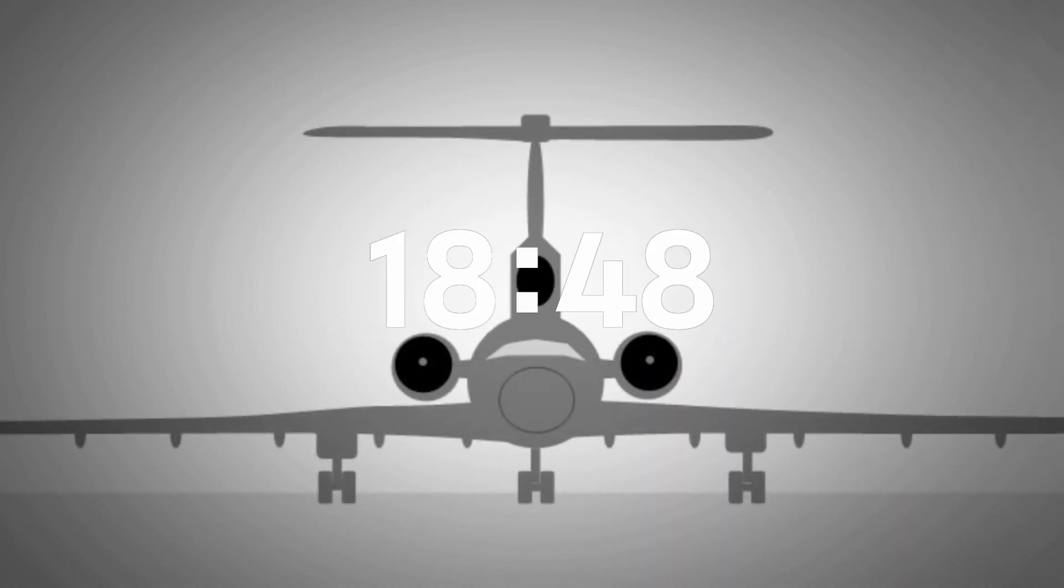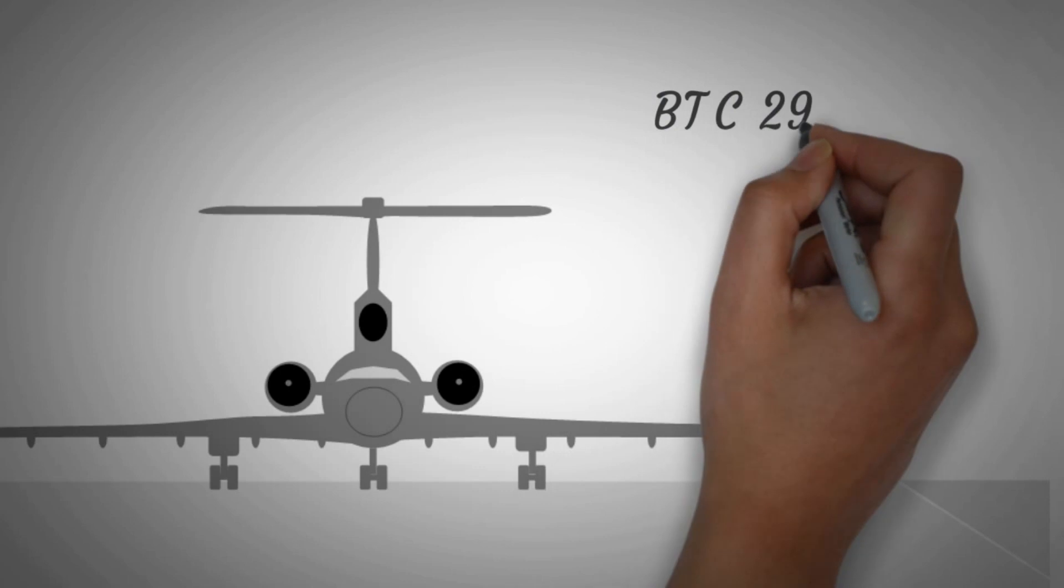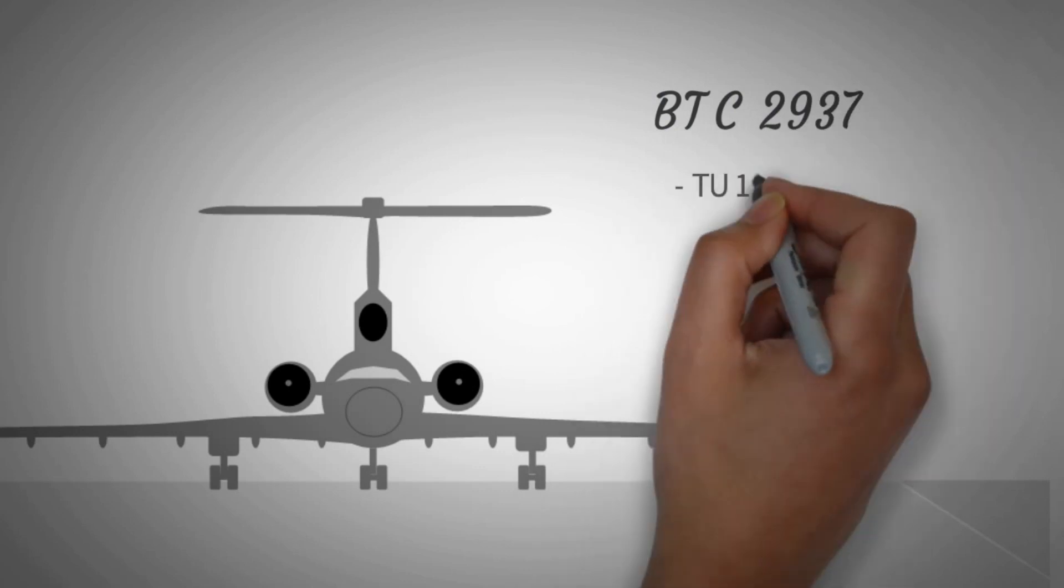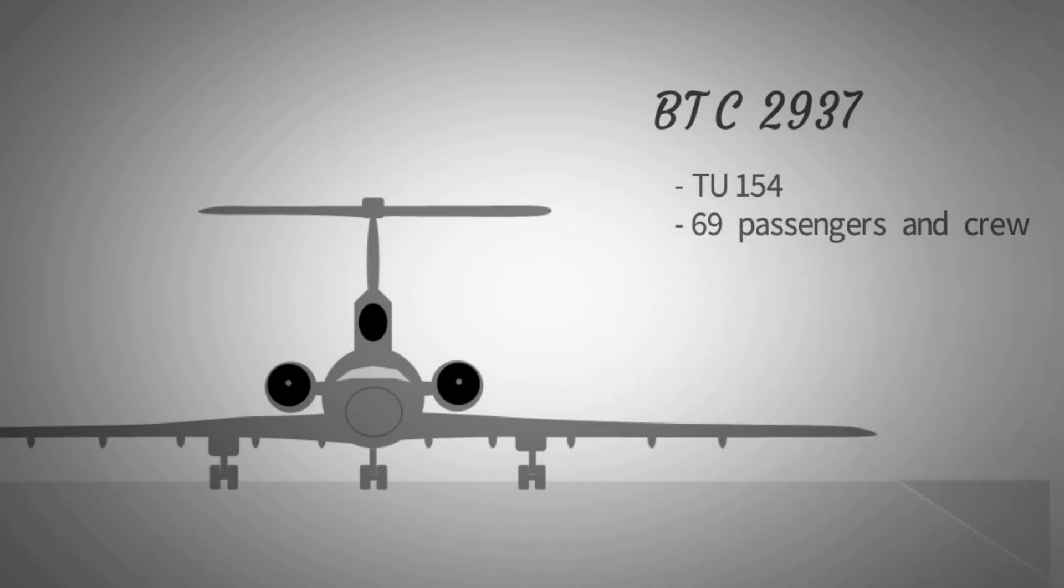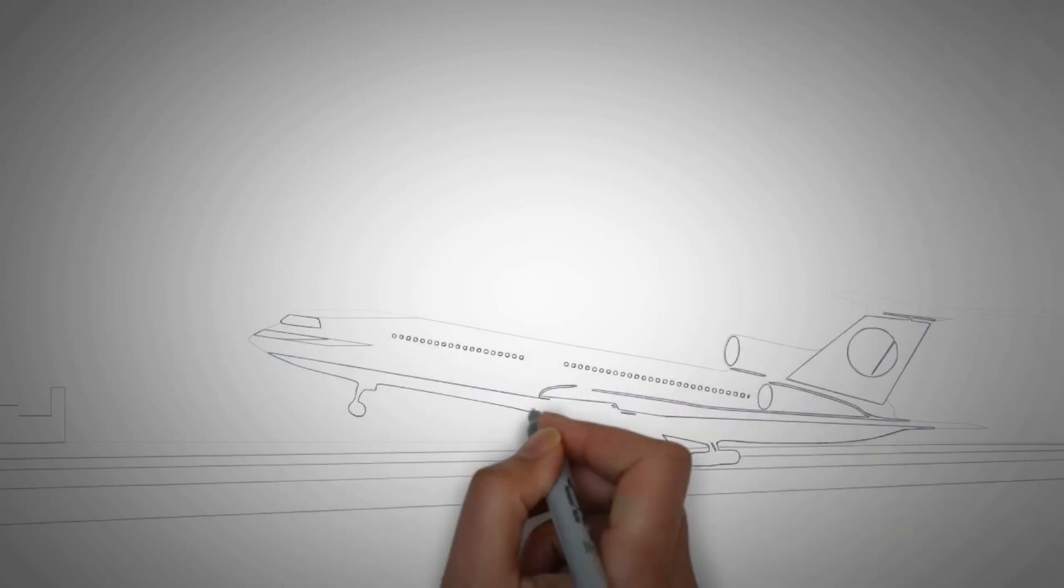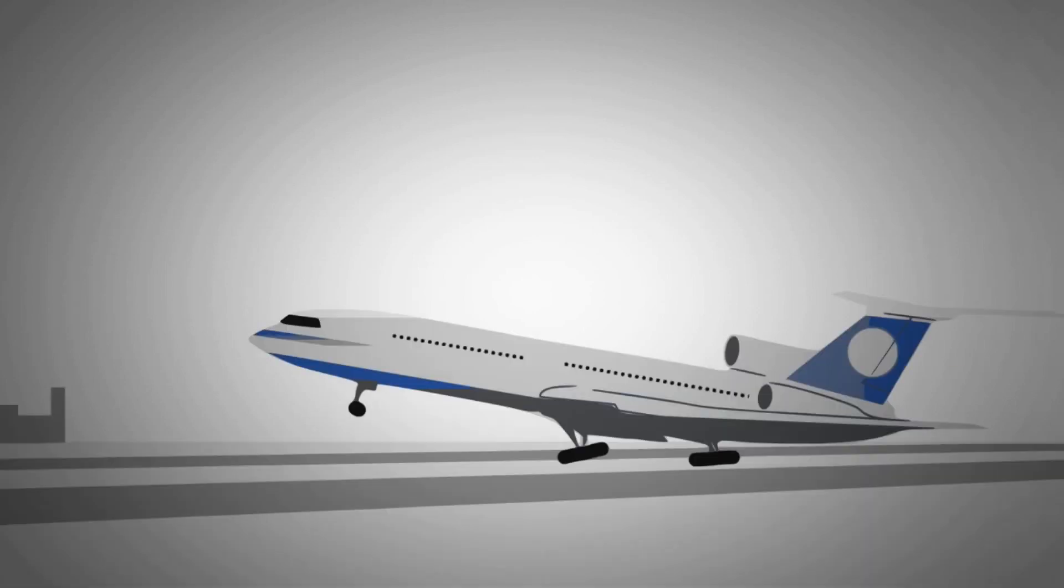On July 1, 2002, a BTC-2937 Tupolev 154 Type, carrying a total of 69 passengers and crew, departed from Moscow, Russia, and headed for Barcelona.